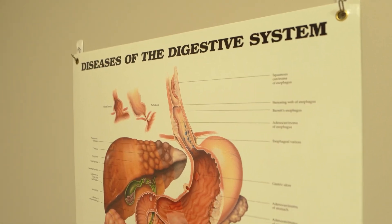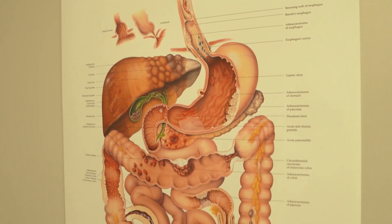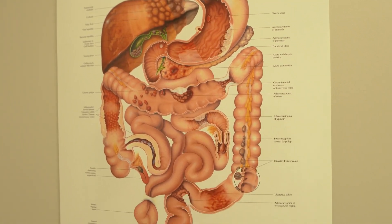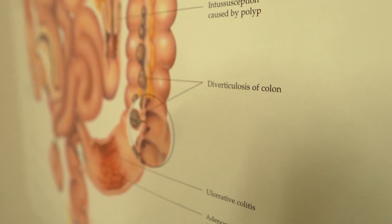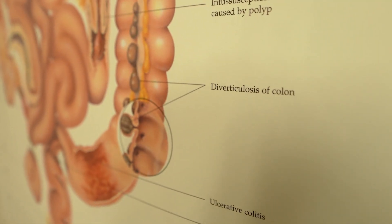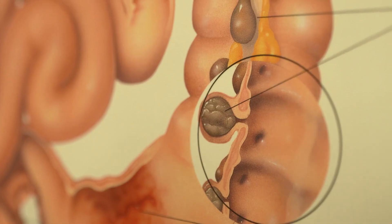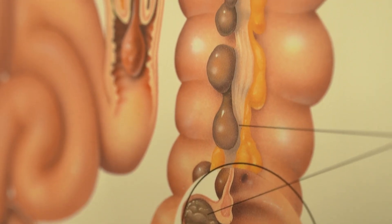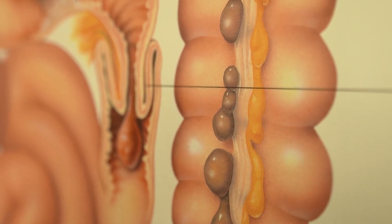There are things people can do to prevent diverticulosis and diverticulitis, and some things they can't control. Controllable factors include having a diet high in fiber, eating nutritious foods, and avoiding processed foods. Smoking and alcohol use have been associated with diverticulitis and diverticulosis, and obesity and a sedentary lifestyle are other factors that can contribute to these diseases.